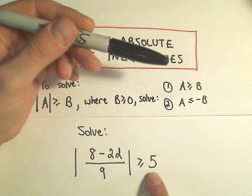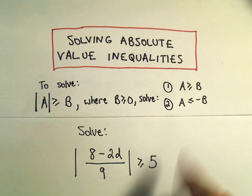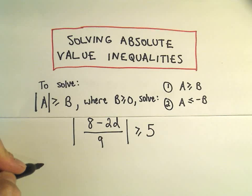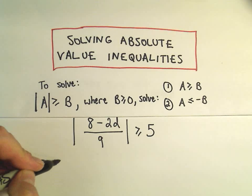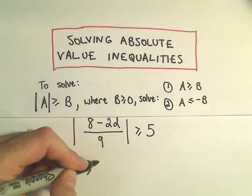What we're going to do is basically just set up two inequalities that we have to solve. So the first inequality basically just says remove the absolute value. So 8 minus 2d over 9 greater than or equal to 5.